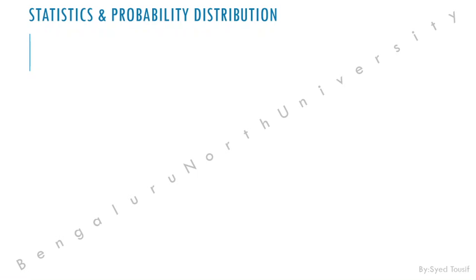Every day we discuss things like artificial intelligence — our cars, our mobile devices support AI. Machine learning is something we discuss constantly. All of these things happen because of large sets of data being summarized and analyzed. Statistics is the foundation of artificial intelligence, machine learning, and business intelligence.